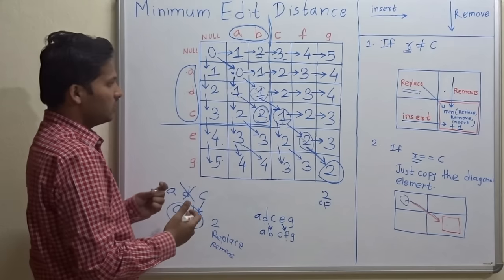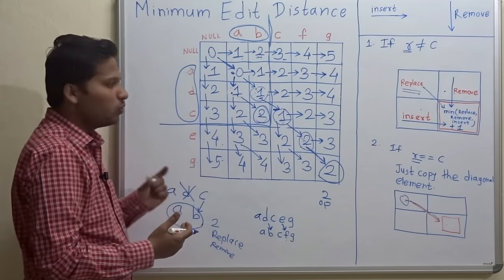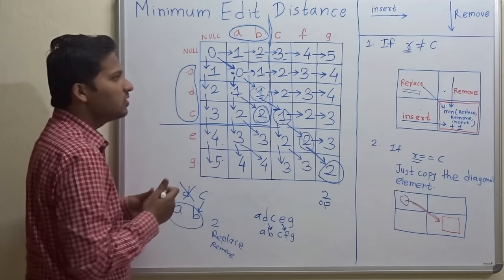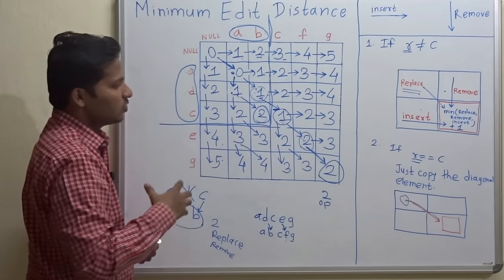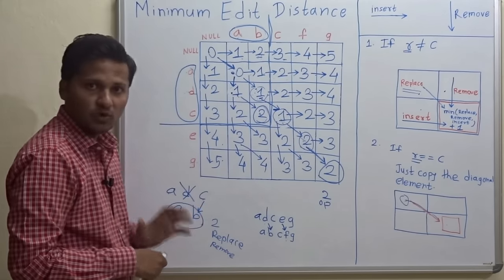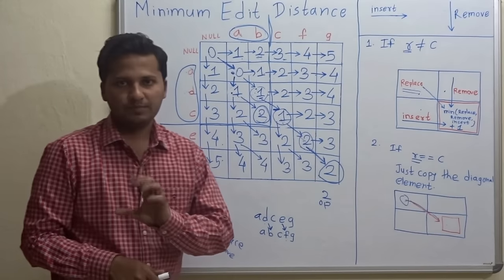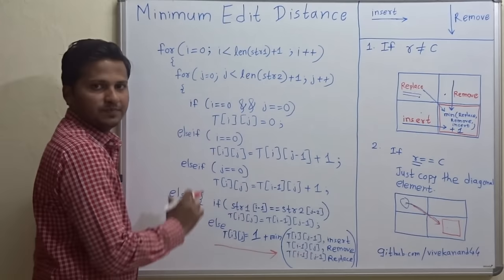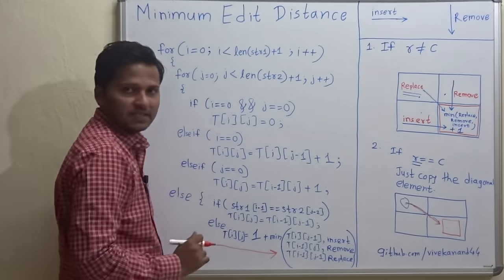I showed you the second example just to help you understand how to backtrack efficiently. This is how we use dynamic programming. Now we will see the program. Here is the pseudocode and these are the cases.